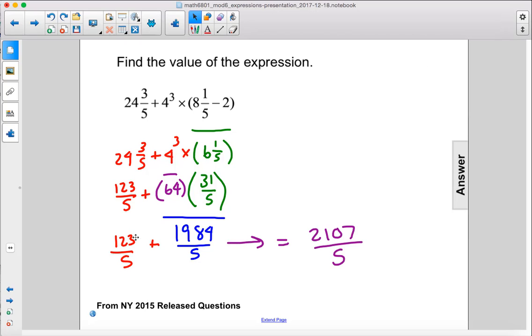So if you add 123 to 1984, we get 2107 divided by 5, which is 421 and 2 fifths.